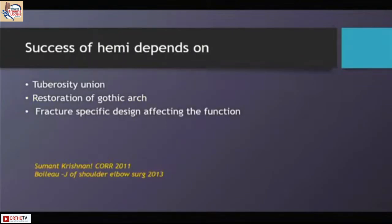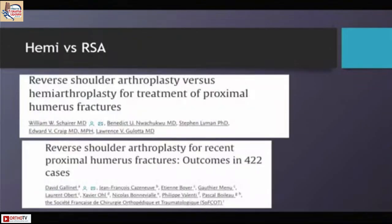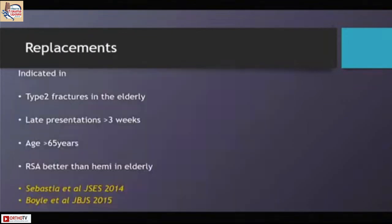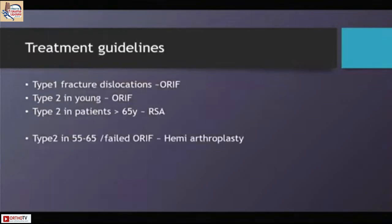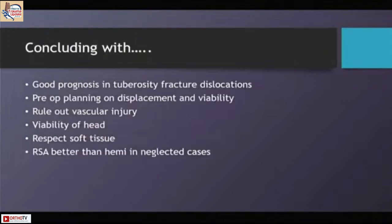Hemiarthroplasty works well if there is a good quality rotator cuff and in a younger patient with a comminuted head fracture. By and large, most surgeons have moved on to reverse shoulder arthroplasty, especially if age crosses 55 to 60 years. Replacements are particularly indicated in type 2 fractures in the elderly, late presentations over three weeks, and age more than 65 years. Treatment guidelines: type 1 fracture dislocations — osteosynthesis; type 2 young — osteosynthesis; type 2 elderly — reverse shoulder arthroplasty.